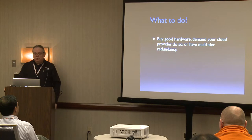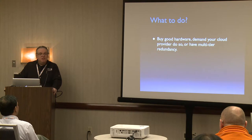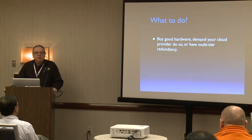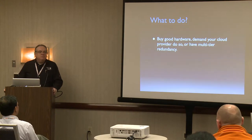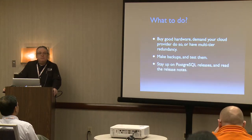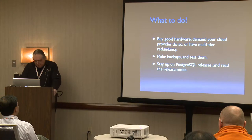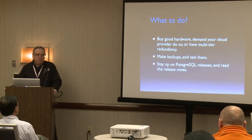So, before you hit a corruption event: buy good hardware. Have multi-tier redundancy — have a secondary, have continuous good backup someplace else. Make these backups and test them. I recommend priming developer laptops and workstations from prod backups, because if the backups stop working, you'll hear about it. And stay up on Postgres releases — don't defer them. It's alarming when I go into a place and they're running 9.3.0, which is about 12 minor releases back.